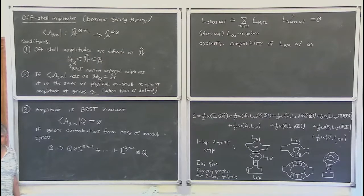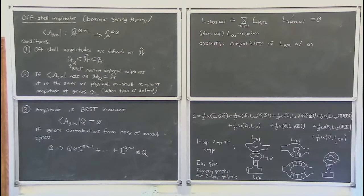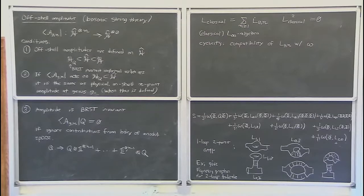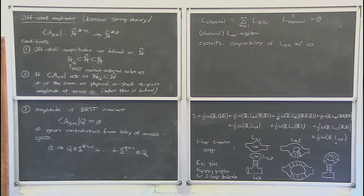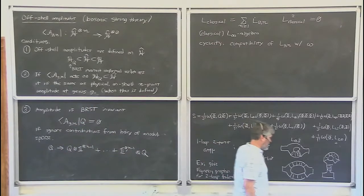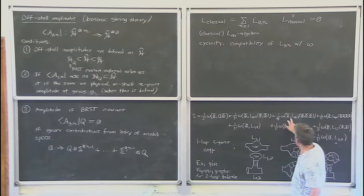An off-shell amplitude is not a physical quantity and is not of direct interest a priori, especially without additional structure from a Feynman graph expansion in string field theory. But we are interested in this concept because an off-shell amplitude is very close to being the same thing as a vertex in the string field theory action. The vertices — the multi-string products in the action — are off-shell amplitudes where you leave out the portion of integration from the boundary of moduli space. So off-shell amplitudes are a warm-up exercise for understanding what these multi-string products are.